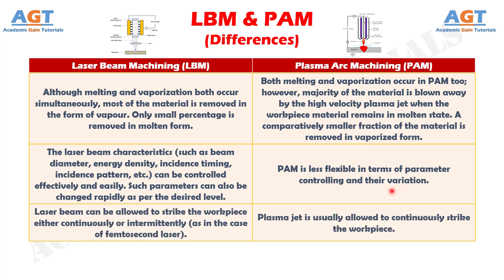Number 6: In Laser Beam Machining, the laser beam can be allowed to strike the workpiece either continuously or intermittently, as in the case of pulsed laser. Whereas in Plasma Arc Machining, the plasma jet is usually allowed to continuously strike the workpiece.